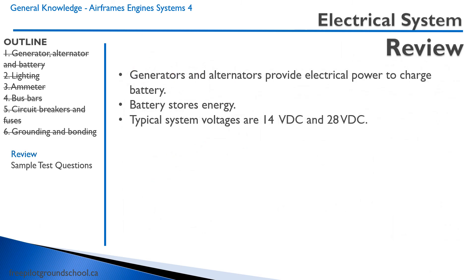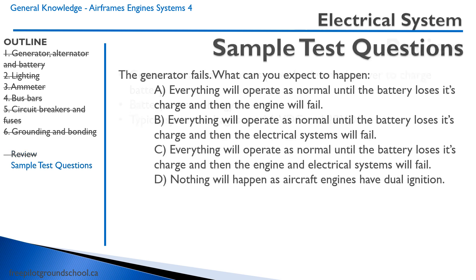Generators and alternators provide electrical energy to charge the battery, and the battery stores that energy. Typical electrical system voltages are 14 volts and 28 volts in aircraft. Example test question: the generator fails — what can you expect to happen? Option A: everything operates normally until the battery loses its charge, then the engine fails. That's not correct — the engine spark is provided by the magnetos, so the engine will not fail. Option B: everything operates normally until the battery loses its charge, then the electrical systems fail. That is the correct answer.